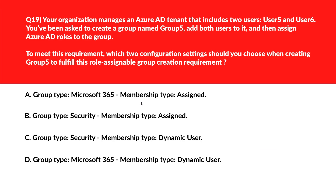We need to select two correct configuration settings. Option A and B: Azure AD role assignment supports both Microsoft 365 and Security group types when membership is manually controlled. Keeping these. Option C: Group type Security with dynamic user membership doesn't support role assignment due to lack of admin-managed control. Incorrect.